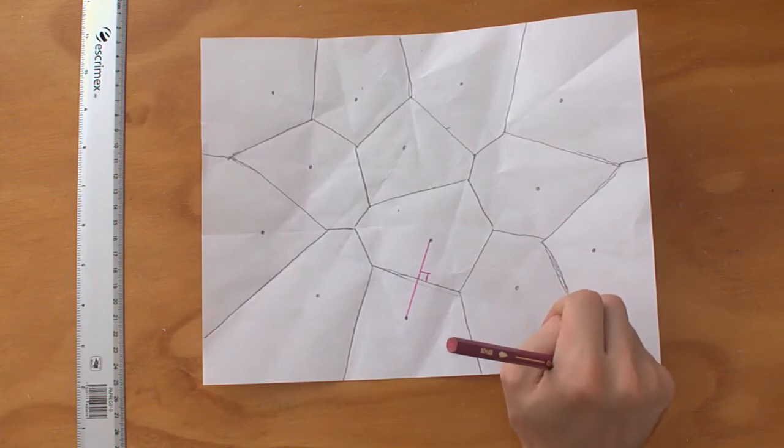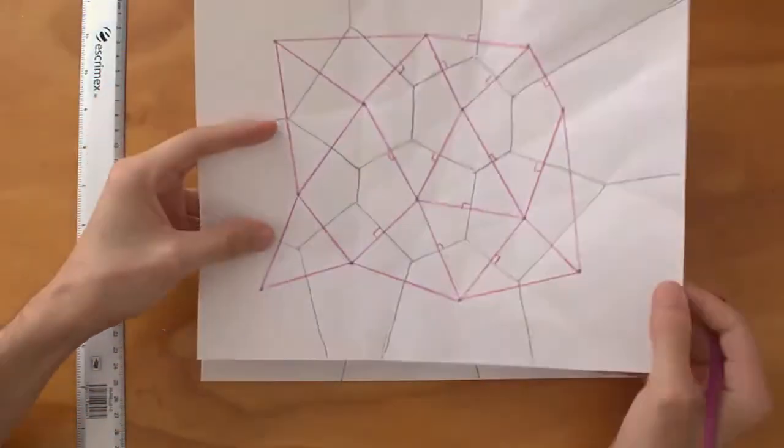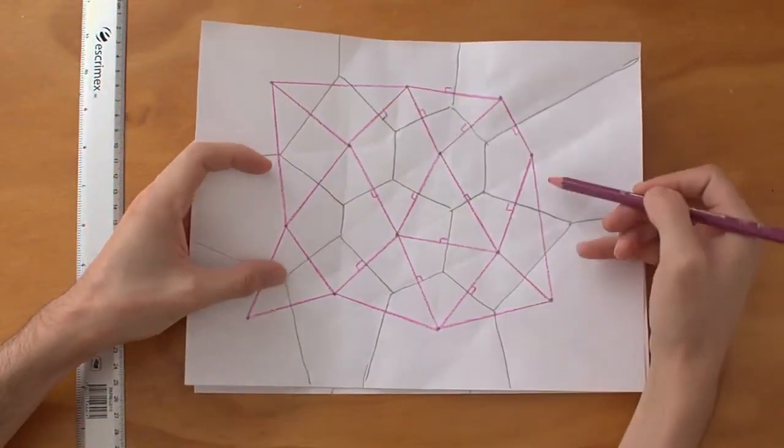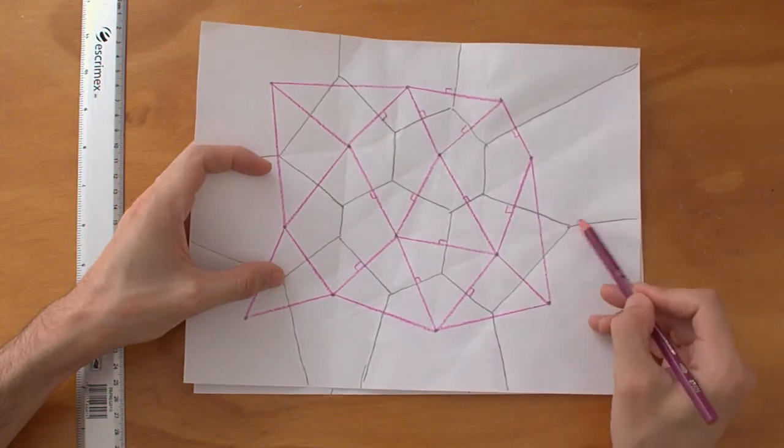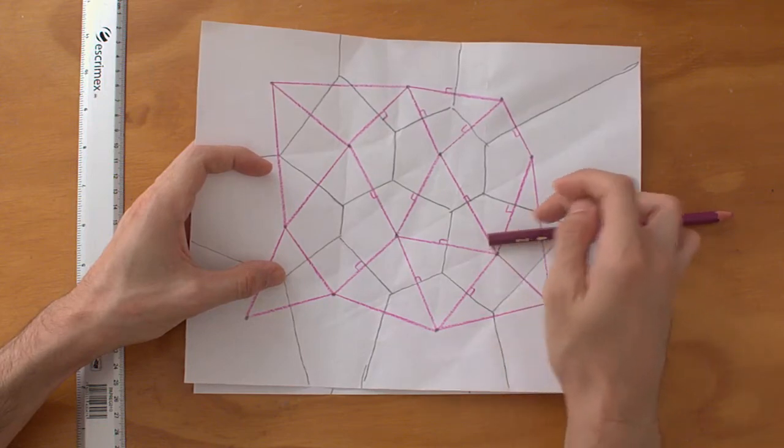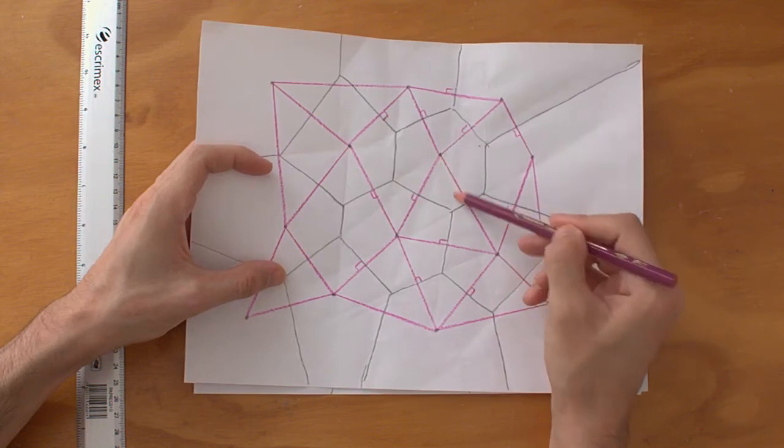We can actually trace the dual of these sets of points. I have this other example from the last take where I traced the dual. There again, I did the right angle thing. We have this interesting case where the line is sort of not touching the Voronoi line which corresponds to it.